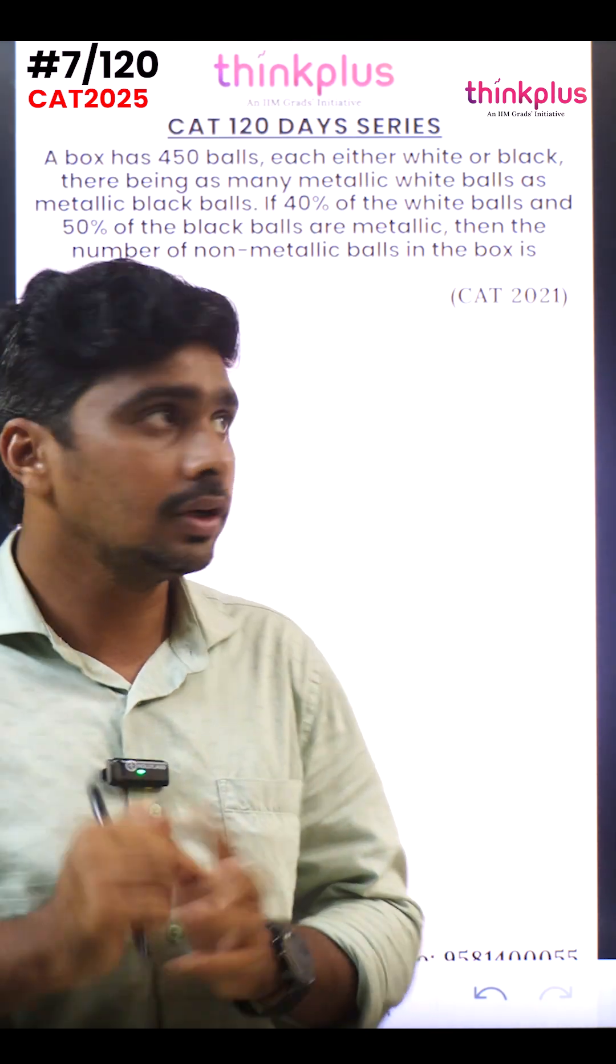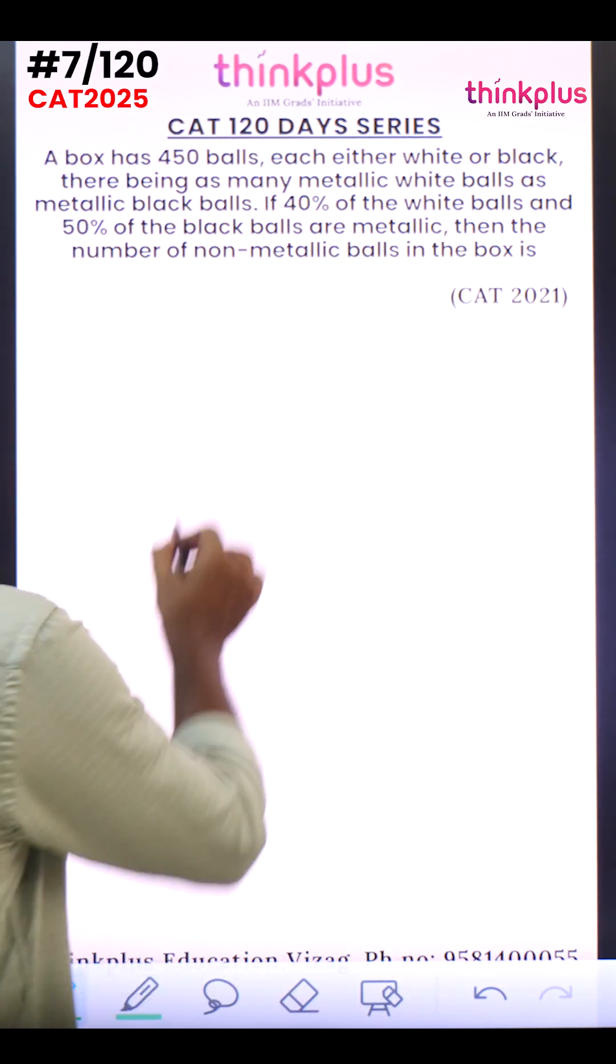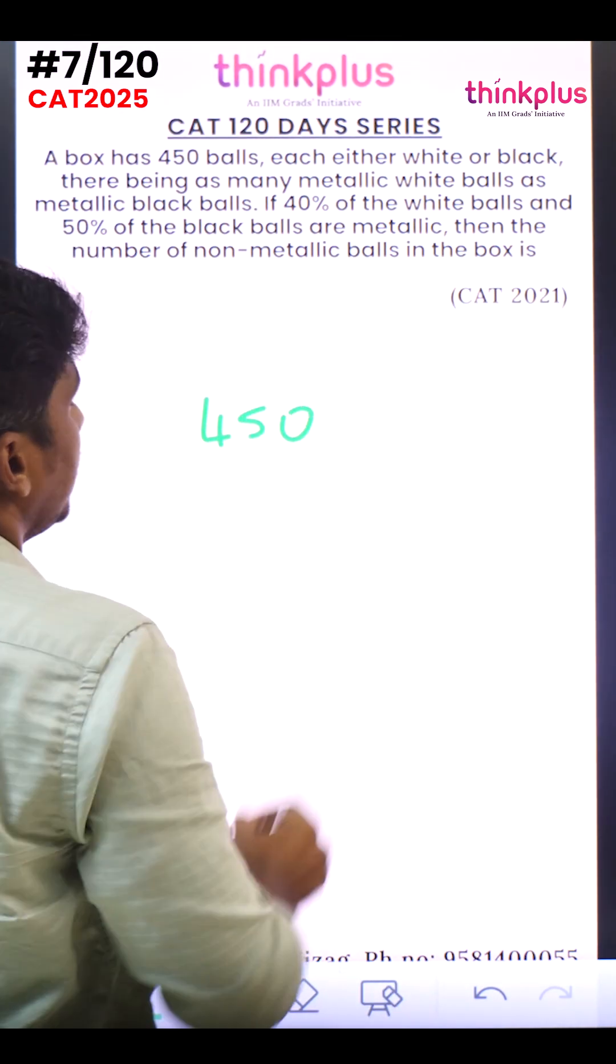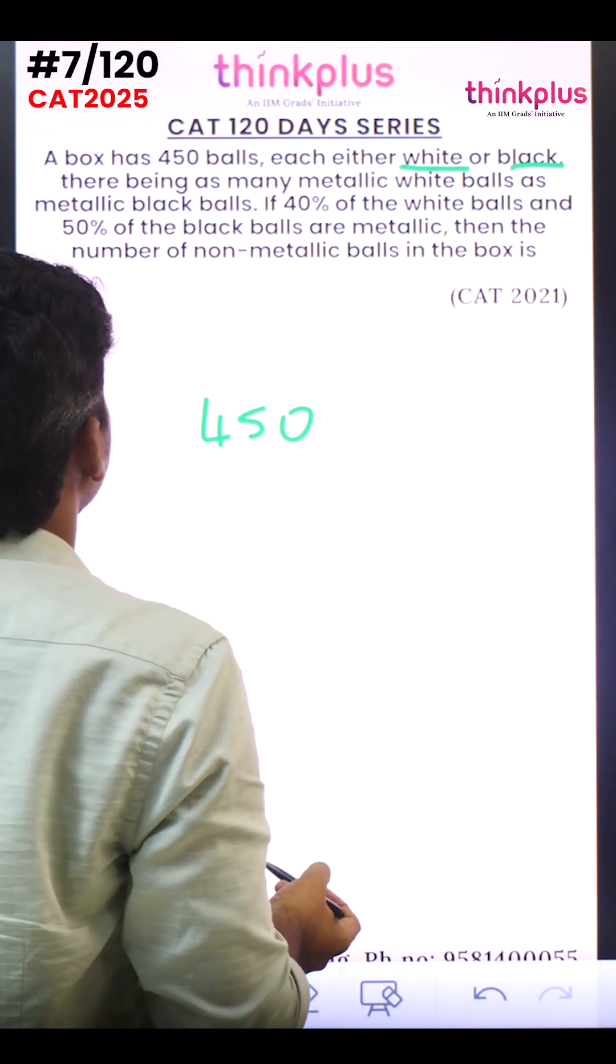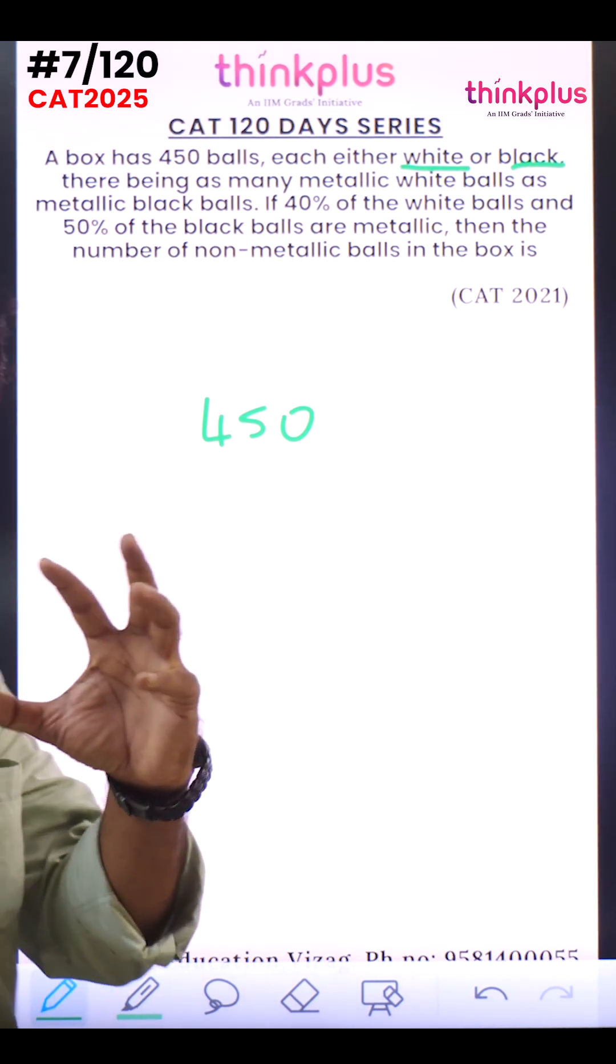Let's look at this CAT 2021 question. A box has 450 balls, each either white or black. There are as many metallic white balls as metallic black balls.